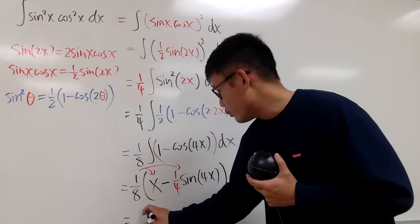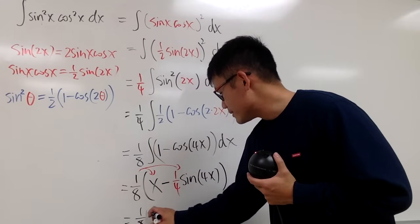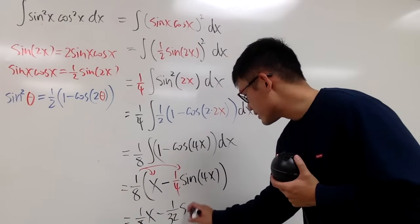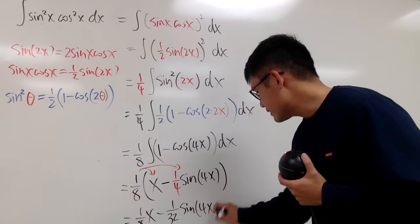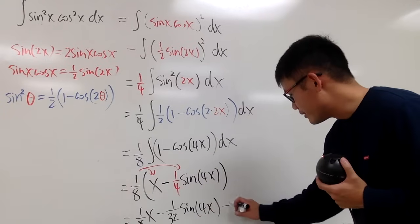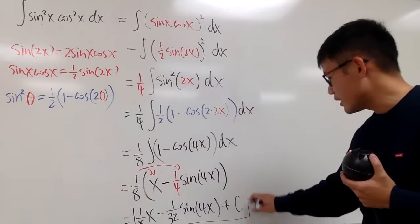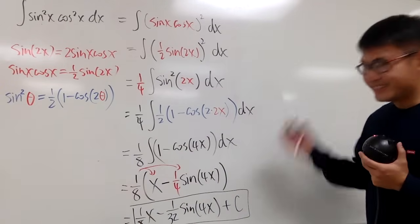So finally, we will have 1 over 8 times x. And then this times that is 1 over 32. And then we maintain the sine of 4x. And then we are done. We can put down plus c. And we can be really happy because this is the correct answer. All right. So this right here is it.